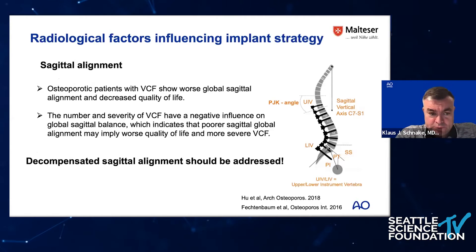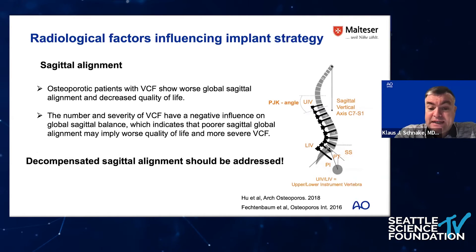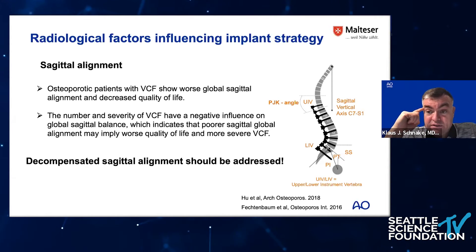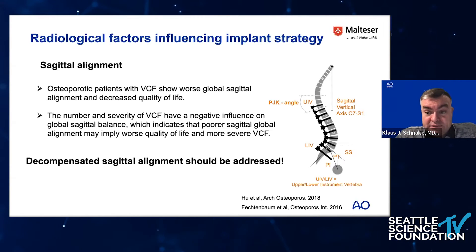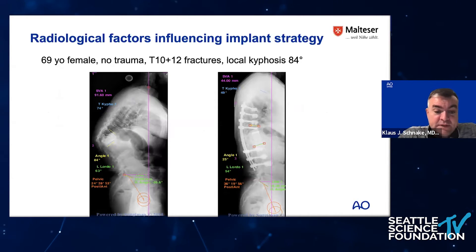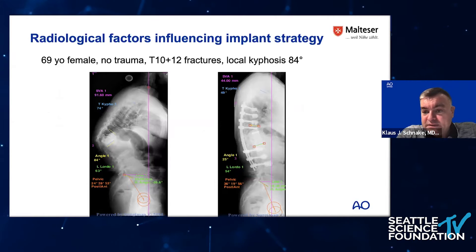Sagittal alignment is important too. Patients with osteoporotic vertebral compression fractures typically show worse global sagittal alignment, which leads to decreased quality of life. It makes sense to perform standing X-rays whenever possible to assess whether the patient already has a decompensated sagittal spine, as this correlates with low quality of life and further fractures. Here is an example where the plumb line is far advanced, indicating sagittal imbalance due to fractures, and correction was performed to restore sagittal alignment.